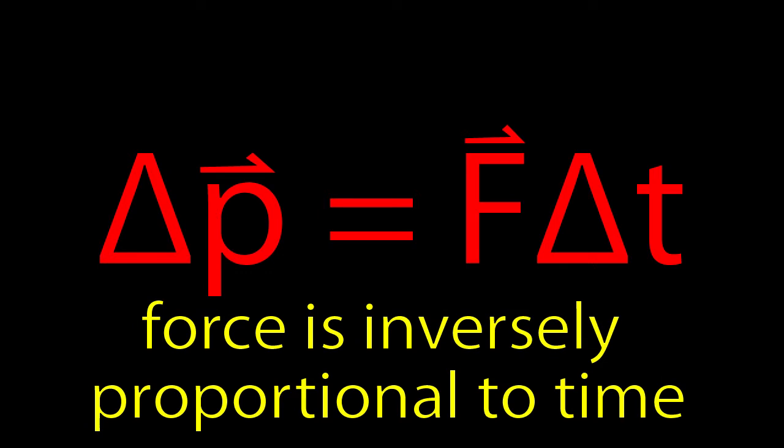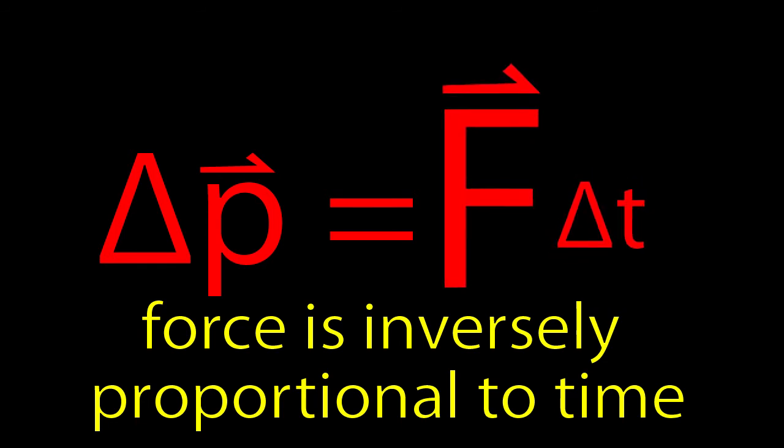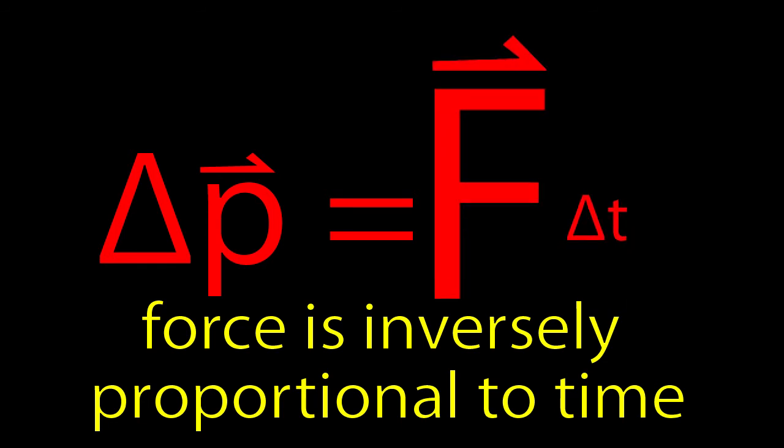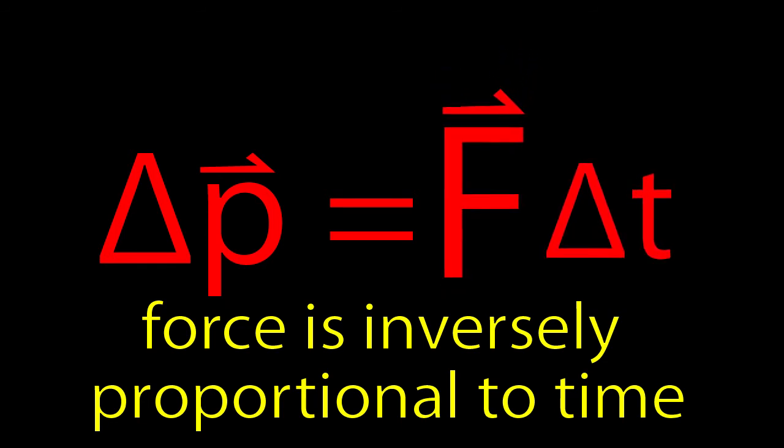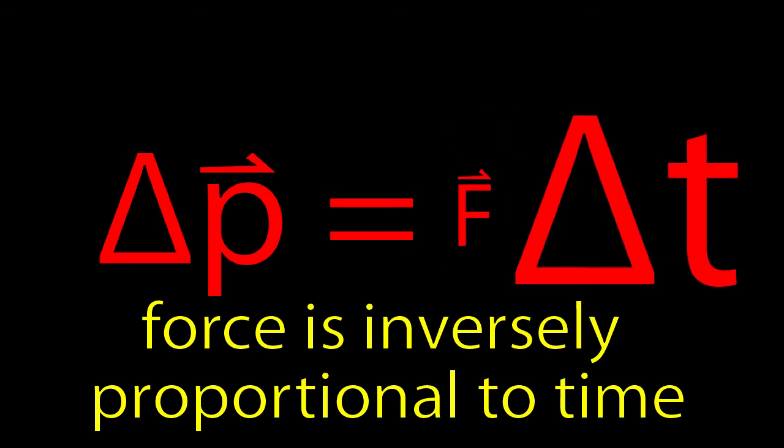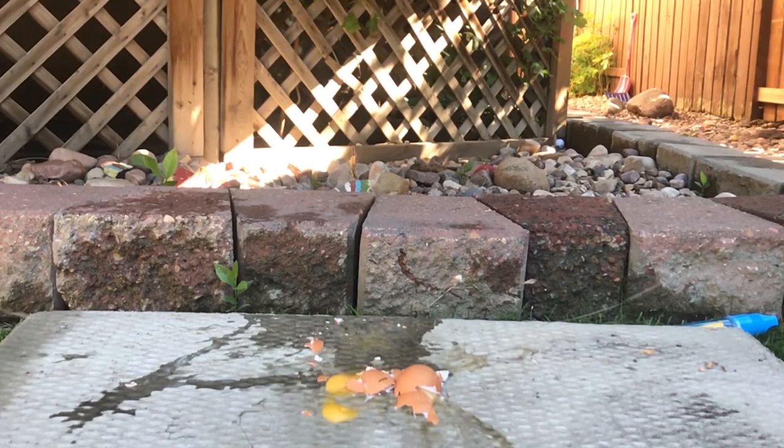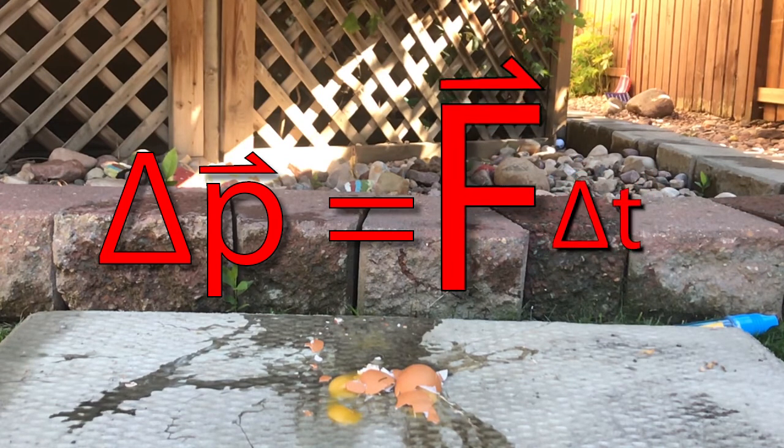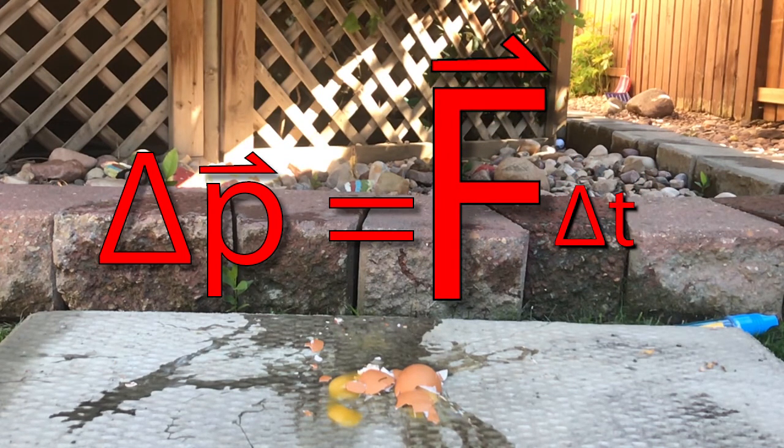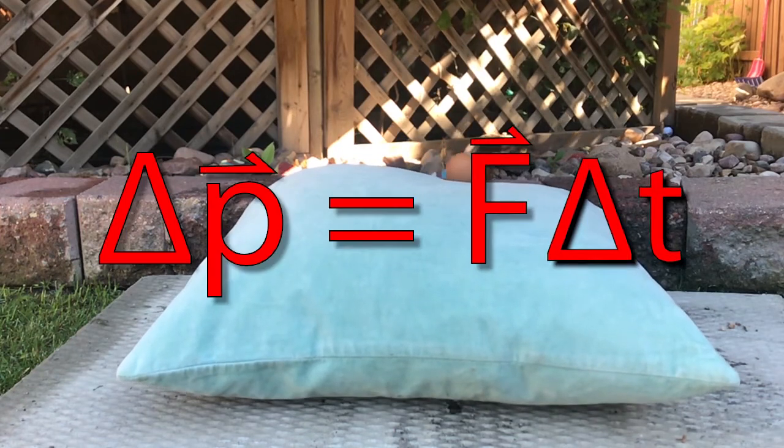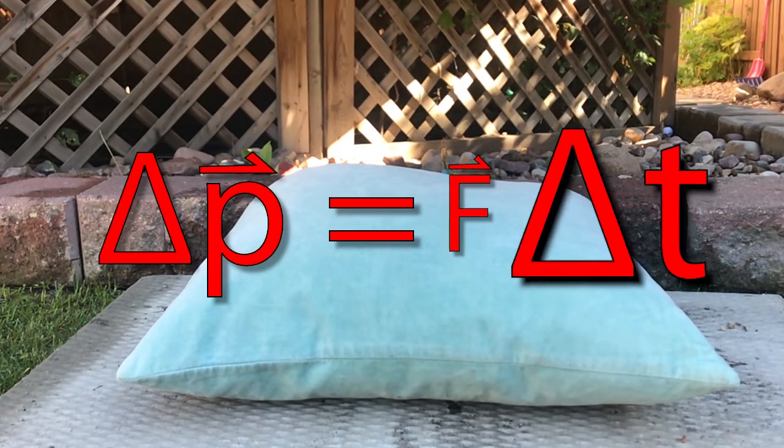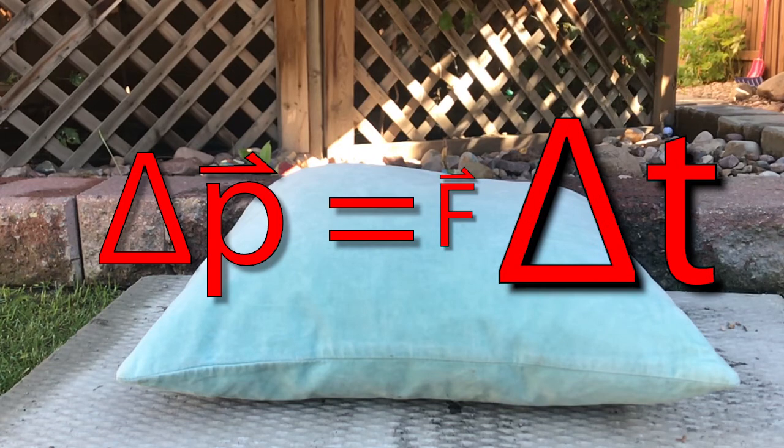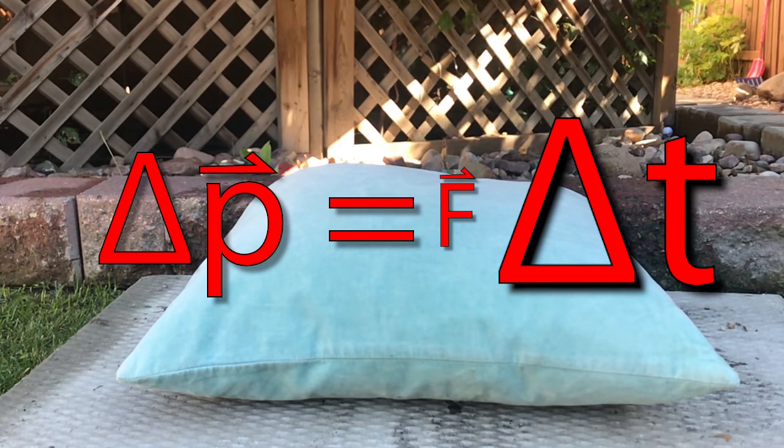Now this gives us an inverse relationship between the force and the change in time, meaning that the force can be large, but you've got to make your change in time small. Or vice versa, you can have a big change in time and that will result in a small force. So when the egg hits the concrete, it does so in a very short period of time, making the force acting on the egg really large. When the egg hits the pillow, the force is less because the interaction time between the egg and the pillow is slightly longer and that longer time or larger time is going to make for a smaller force.